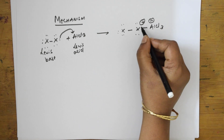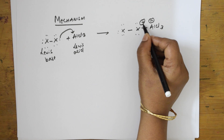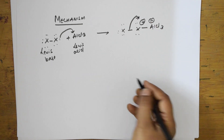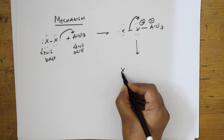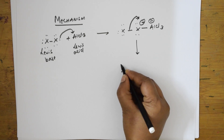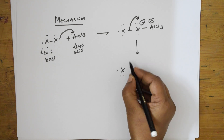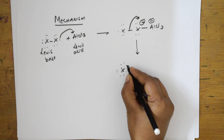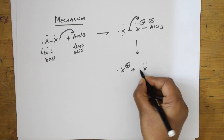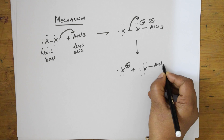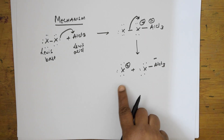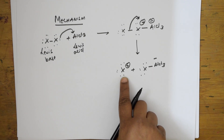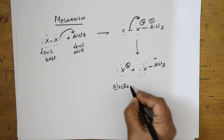Because AlCl3 accepted the electron pair it becomes negative (AlCl4−), and because the halogen lost the shared pair, the bond shifts and that halogen becomes X+ — a halonium ion. This halonium ion X+ acts as a Lewis acid and as an electrophile. We will now take this electrophile forward into the next step of the mechanism.